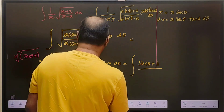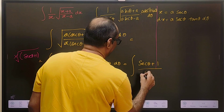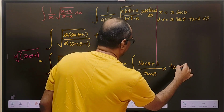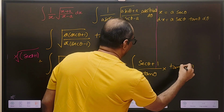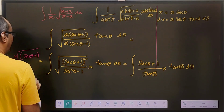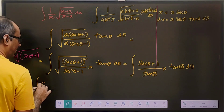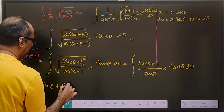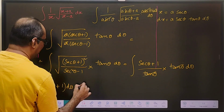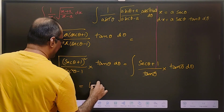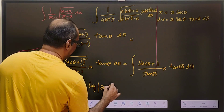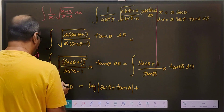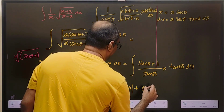In the denominator we have the square root of (secant squared theta minus 1), which is tan theta, and we have tan theta d theta. So we can cancel tan theta with tan theta. Our integral simplifies to simply the integral of (secant theta plus 1) d theta. The integral of secant theta is log of (secant theta plus tan theta), and the integral of 1 d theta is theta, plus c.